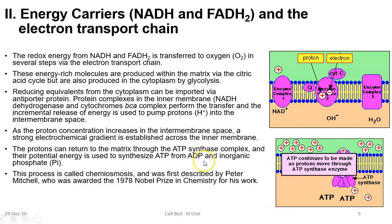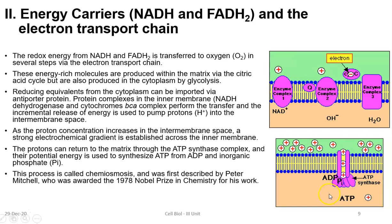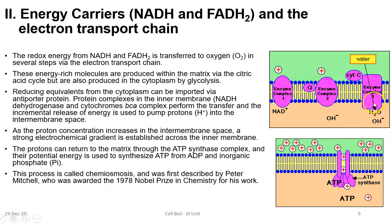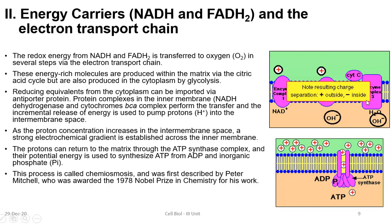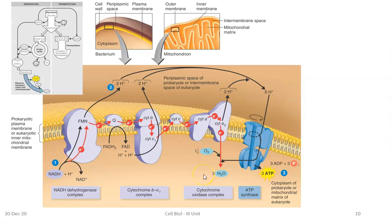If you look at this animation, you can understand how this process takes place. Regarding the electron transport chain, we will separately see a video, so we don't need to worry about its components now. This shows the arrangement of the electron transport chain in the membrane — you can see the arrangement both in bacteria and in a mitochondrion — and we will cover the details in a separate video.